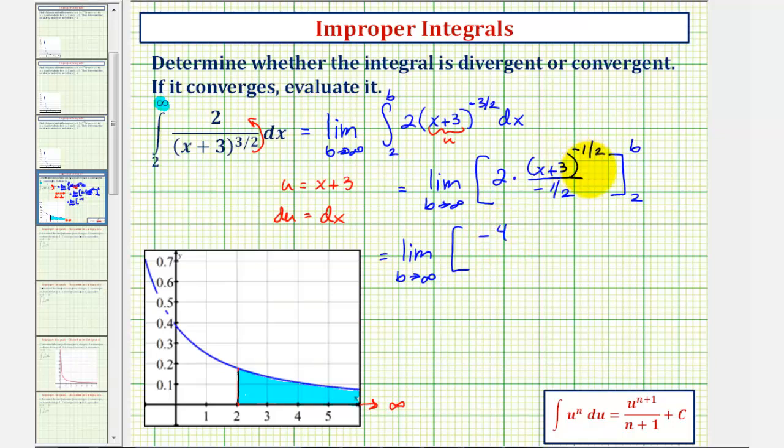And let's move the quantity (x + 3) back to the denominator, so we have a positive exponent. The end result is -4 divided by (x + 3)^(1/2).